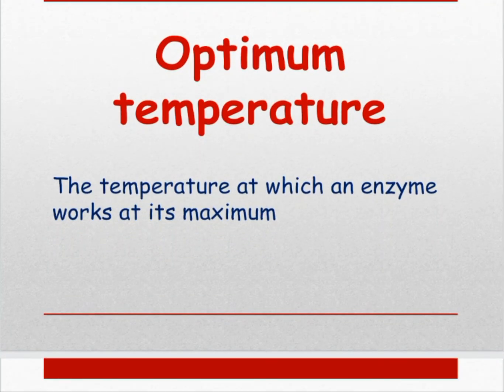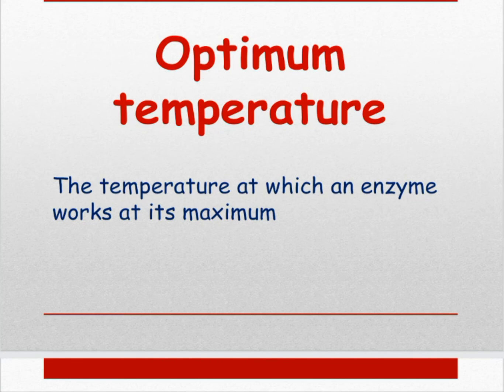Optimum temperature is the specific temperature at which an enzyme works at its maximum speed. The optimum temperature of human enzymes is 36 to 38 degrees centigrade.